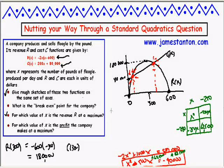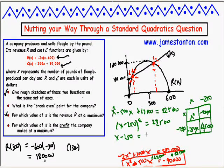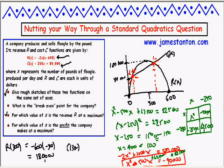That gives me x² - 500x + 62,500 = 22,500. The left-hand side, according to my box, is really (x - 250)², so (x - 250)² = 22,500. Taking square roots: x - 250 = ±150. So x - 250 = 150 or x - 250 = -150.